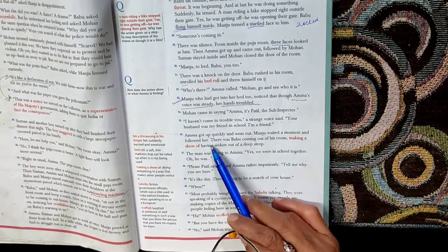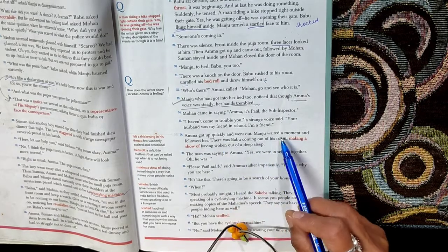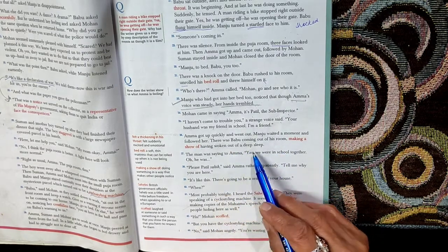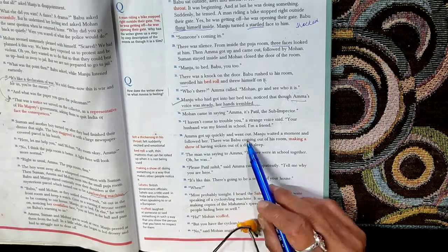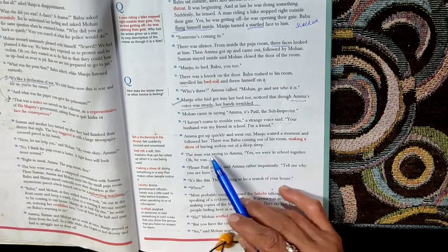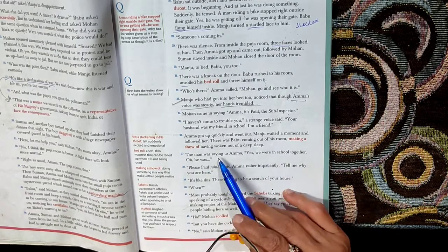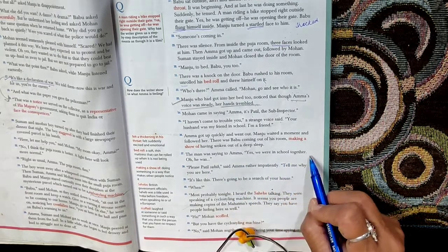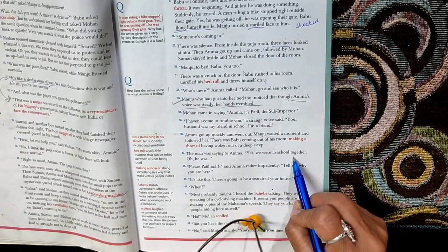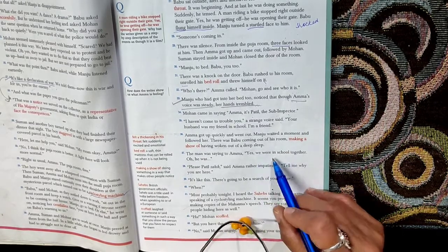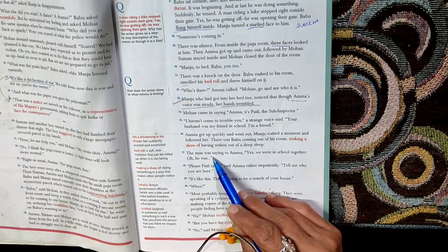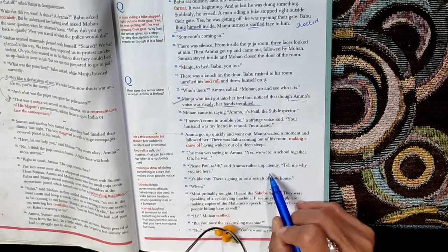Amma got up quickly and went out. Manju waited a moment and followed her. There was Babu coming out of his room, making a show of having woken up out of deep sleep. Now they are doing drama here. So Babu pretends as though he has got up from a deep sleep. The man was saying to Amma, yes, we were in school together. The man is sub-inspector Patil talking to Amma, saying that yes we were in school together, that means Mohan's father and Patil.